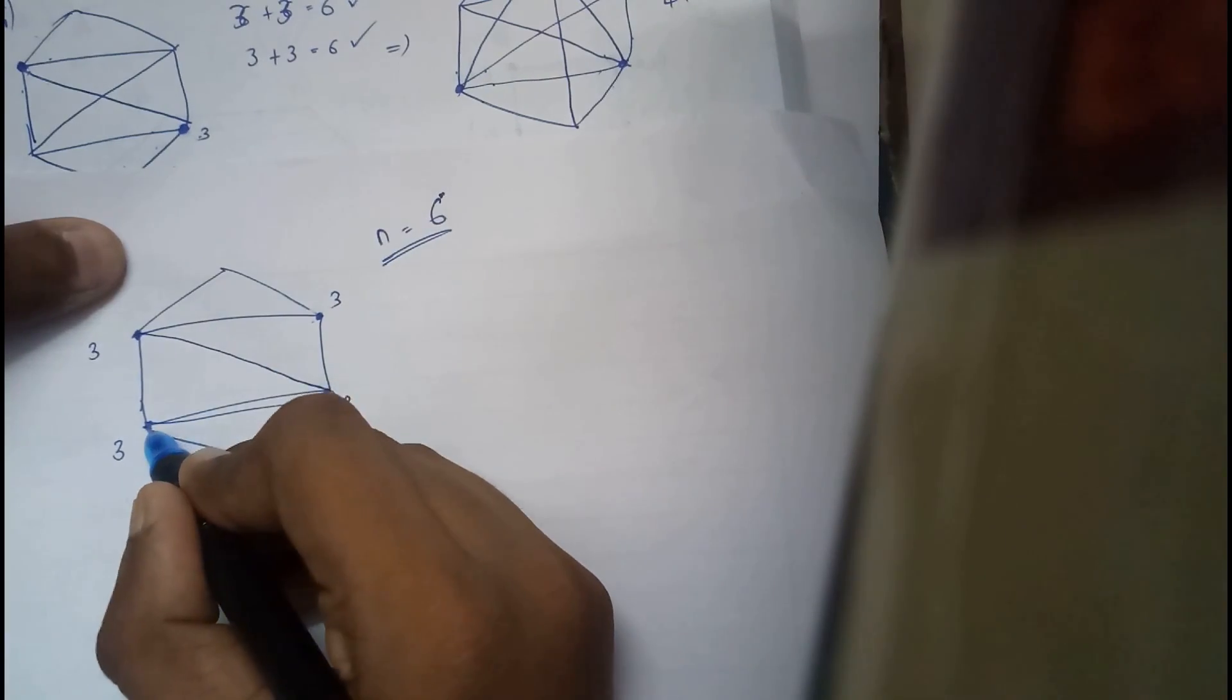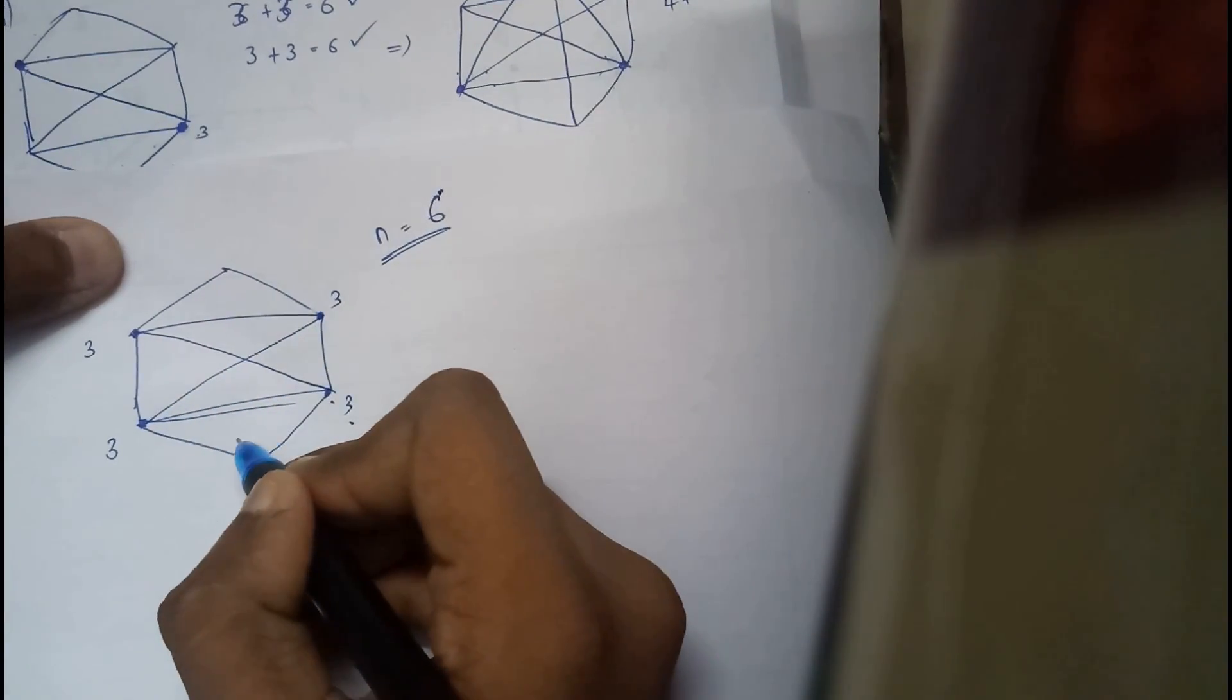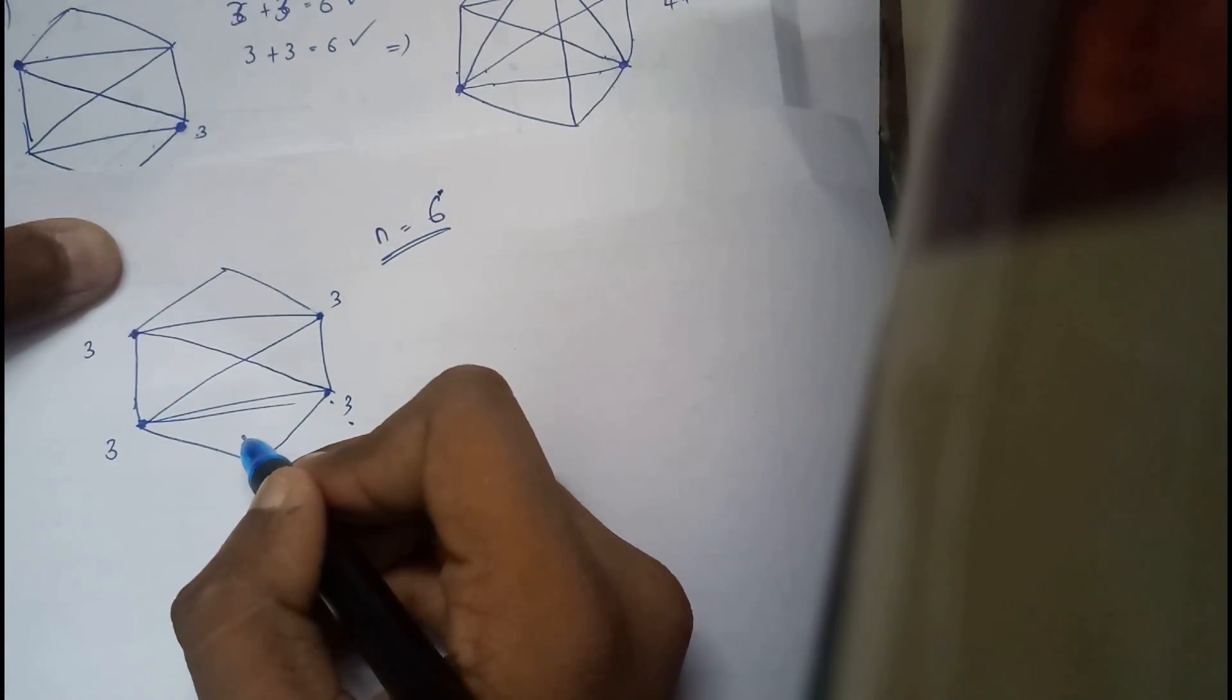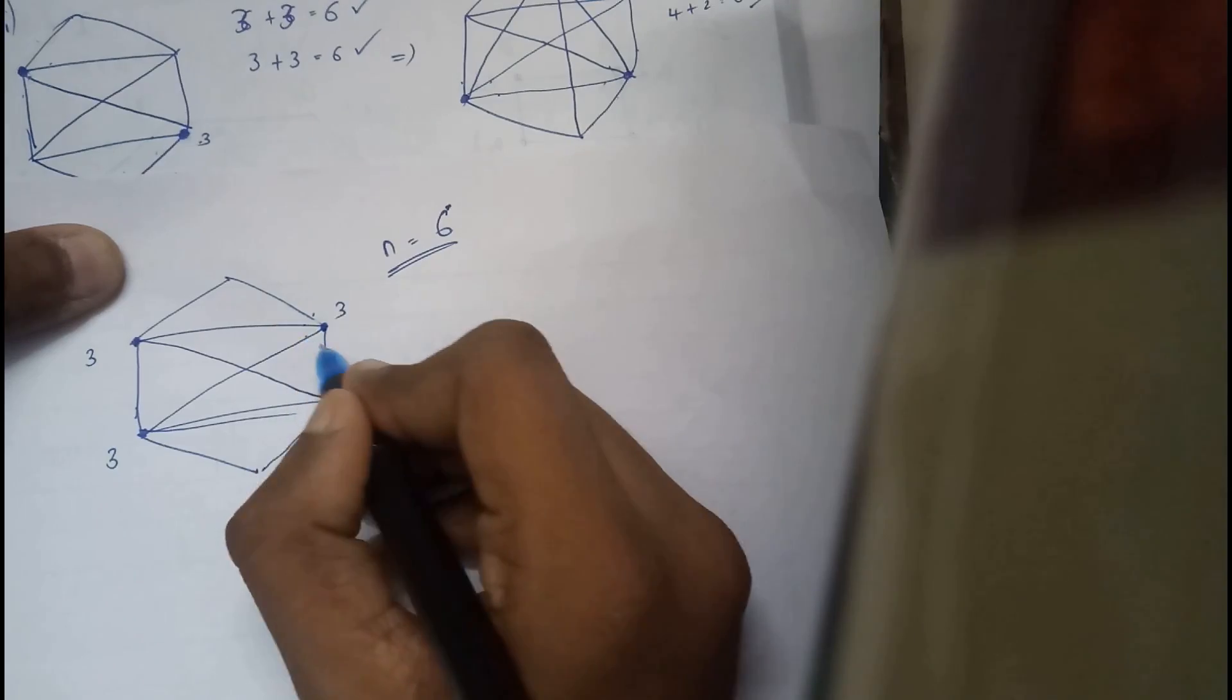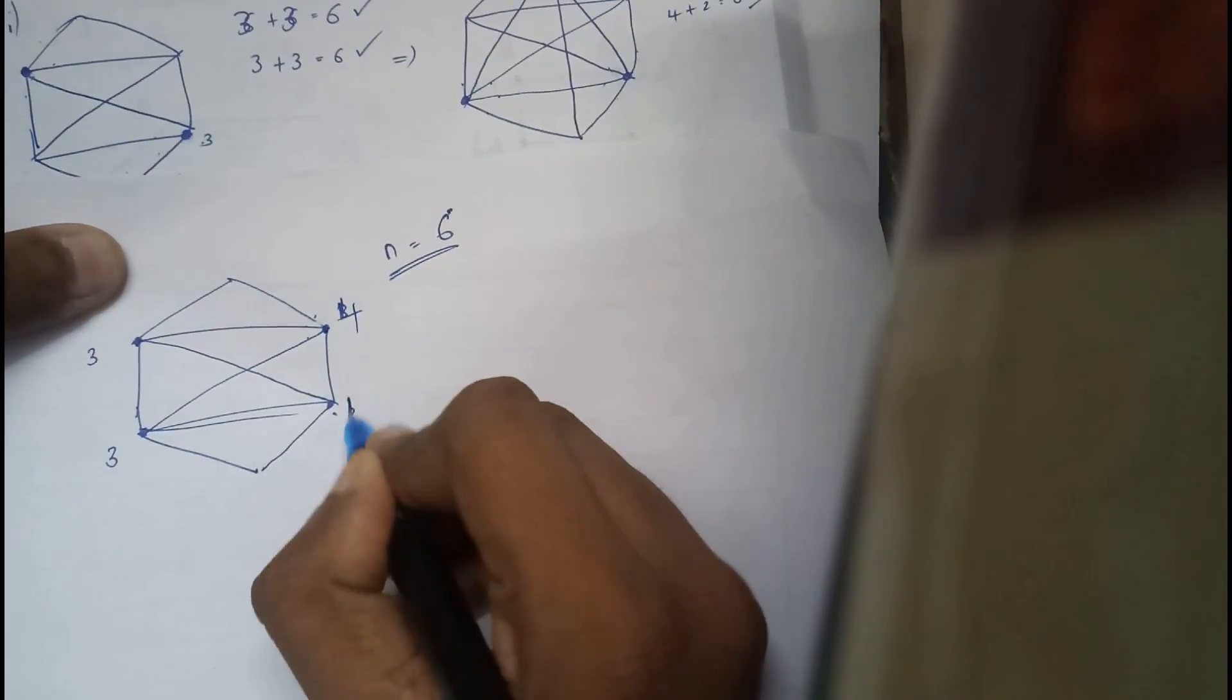Next, again, from here to here, I can add them and that is a path. Now this is four. One, two, three, four. All these places are four now.